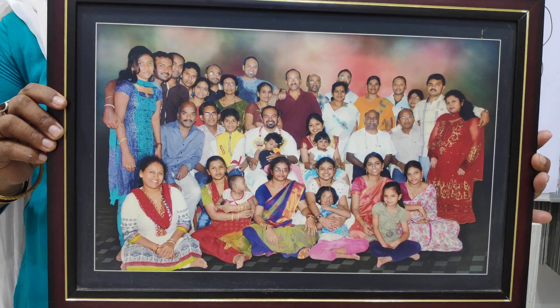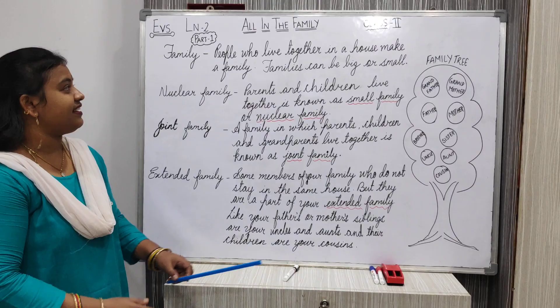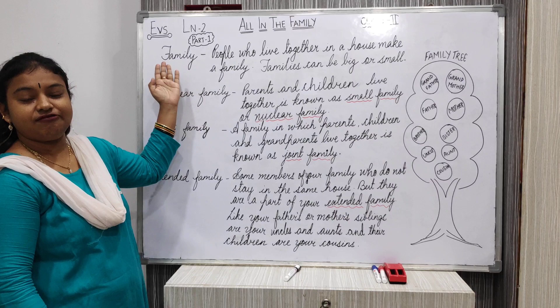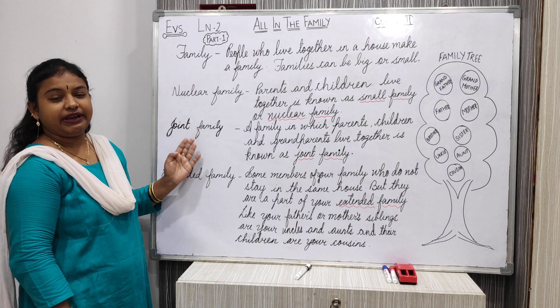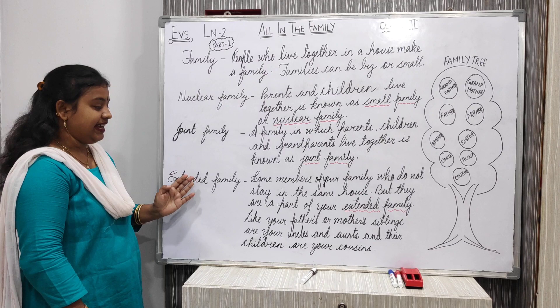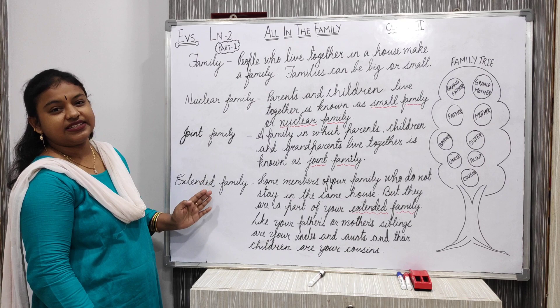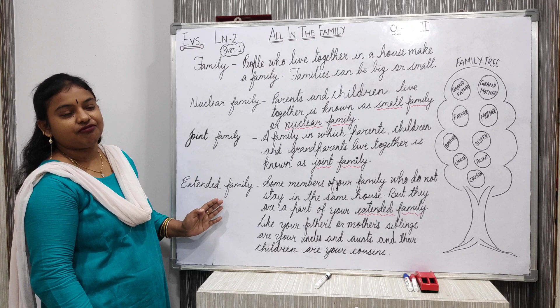Understood, children? So once again, we will go through family. People who live together is known as family. Nuclear family means parents and children live together, known as nuclear family or small family. Joint family means parents, grandparents, and children live together, known as joint family. Extended family means some members are part of our family but don't stay with us in the same home. That's all for today. Tomorrow we will meet again with Part 2 of the same lesson, All in the Family. Thank you children, bye bye and take care.